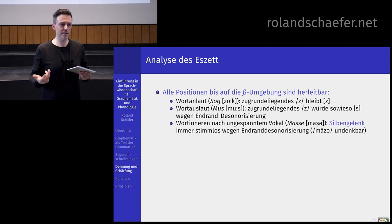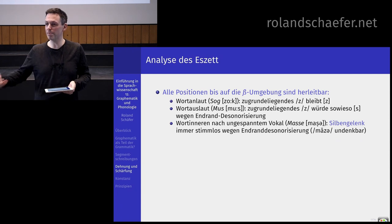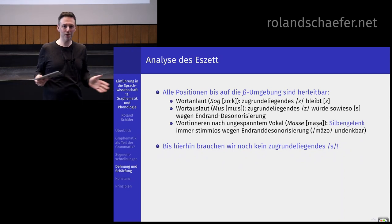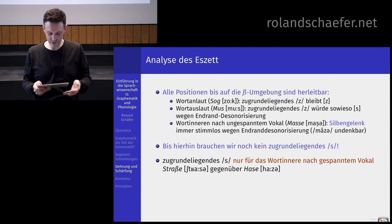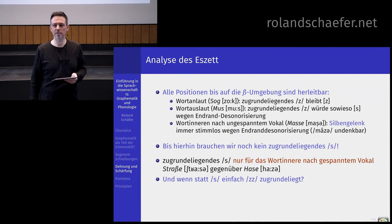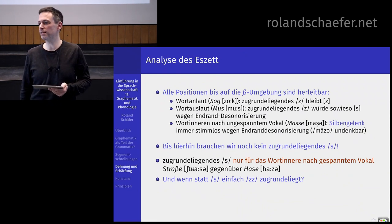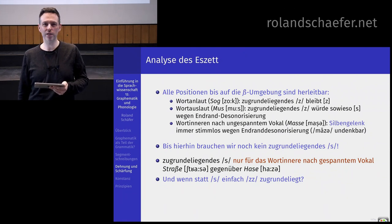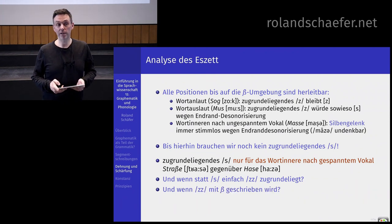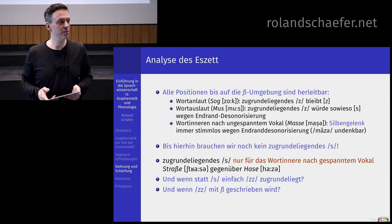Im Wortinneren, nach ungespanntem Vokal, also Masse – da würden wir sagen, es muss ein Silbengelenk sein. Und im Silbengelenk müsste, weil der Vokal ungespannt ist, sowieso ein Silbengelenk kommen. Und selbst wenn wir da ein zugrunde liegendes S annehmen würden, müsste es, weil es im Endrand landet, stimmlos werden. Das heißt: bis hierhin brauchen wir kein zugrunde liegendes stimmloses S – alles wunderbar. Und jetzt kommt genau diese Situation: wir müssen Straße und Hase irgendwie modellieren. Wenn da statt einem stimmhaften S einfach zweimal SZ wäre – was würde dann passieren?